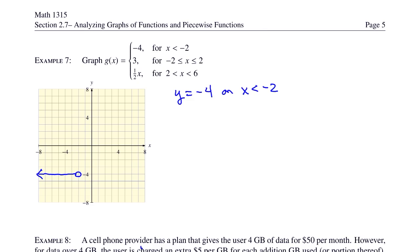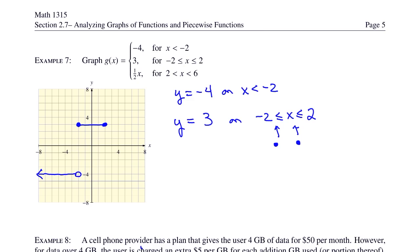Next, y equals 3 on the interval negative 2 to 2. Because of the equalities on both ends, we have closed circles at each endpoint. It's a horizontal line at y equals 3 from x equals negative 2 to x equals positive 2 — solid dot at negative 2 comma 3 going over to solid dot at positive 2 comma 3.